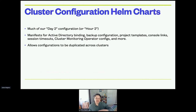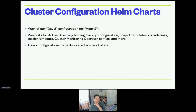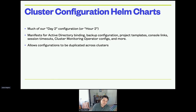The cluster configuration Helm charts contain much of our day-two configuration — or as I call it, hour-two — because you spin up the cluster, you have these Helm charts and your Argo CD, and you get things running very quickly. Manifests within these Helm charts include active directory binding, backup configuration, project templates, links in the OpenShift GUI console, session timeouts to meet security requirements, configuring the cluster monitoring operator, and more. These charts allow us to have consistent configuration across our clusters and organize those resources so they can be easily continuously monitored.